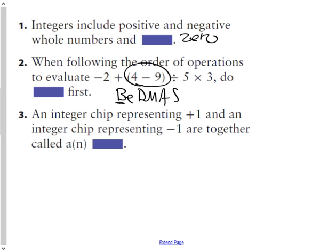And question three: an integer chip representing positive 1, which we use this here, and an integer chip representing negative 1. Put together is called a what? It's called a zero pair.